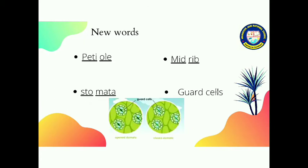Next word is petiole. It is also part of leaf, which leaves are attached to stem and branch. When we connect that stem and branch, that is known as petiole.